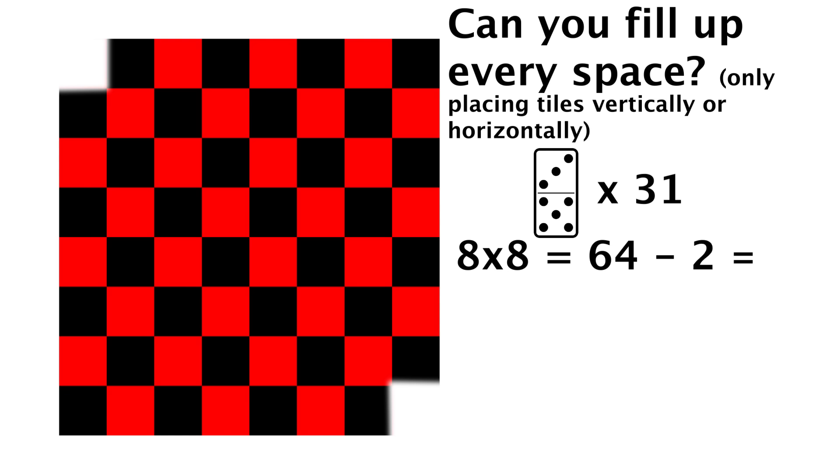Well an 8x8 checkerboard has 64 squares, minus 2 from the ends missing is 62. And 31 dominoes that cover 2 spaces each would cover a total of 62 spaces. But how can we show that it definitely is or is not possible to cover the entire board?